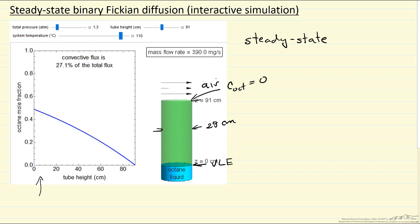The total pressure, as we increase that, also decreases the octane mole fraction. We can increase the tube height and that will decrease the mass flow rate. So this is the total mass flowing out, 390 milligrams per second for these particular conditions. And this depends on tube height, total pressure, and the temperature.